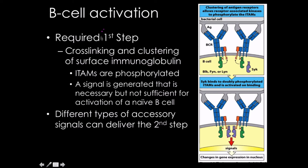The first step that's required — and this is the one you can't avoid — is cross-linking and clustering of the surface immunoglobulin. The signal is not able to go through the transduction pathway if we don't have close proximity and clustering of our B-cell receptors. That clustering of antigen receptors allows the associated kinases to phosphorylate the ITAMs of the Ig-alpha and beta, specifically the ITAMs in the cytoplasmic domain.